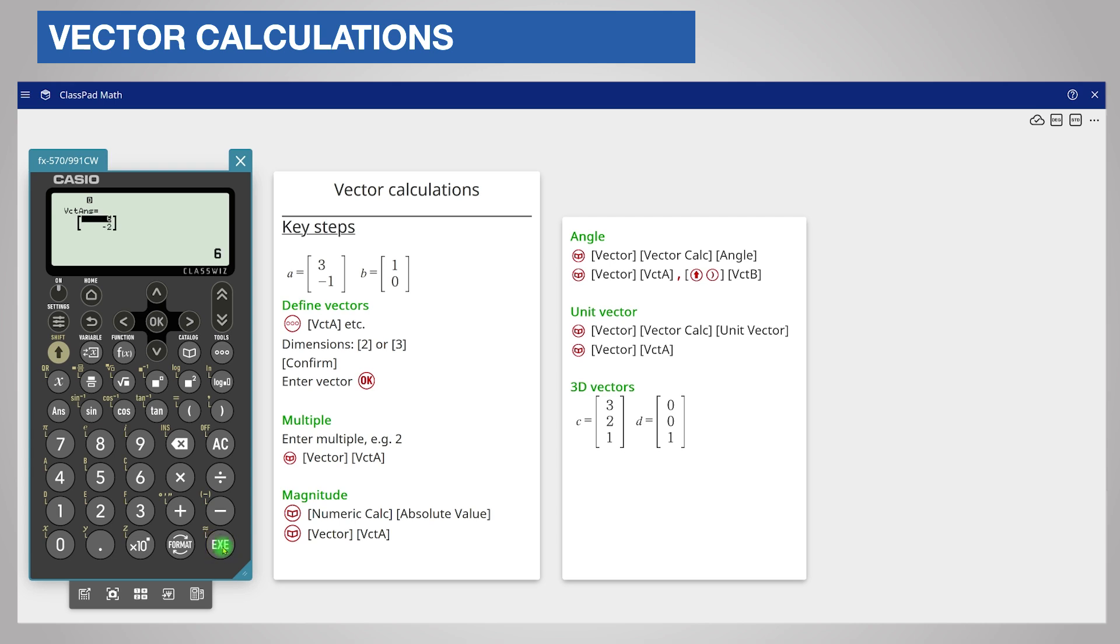Press the execute key and the calculator displays the result. To find the magnitude of vector A, press the catalog key and scroll down to numeric calculation. Choose numeric calculation and then choose absolute value.